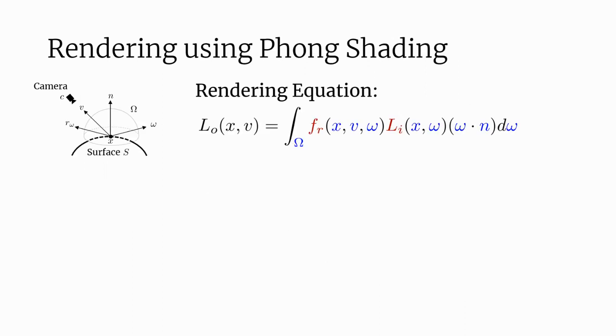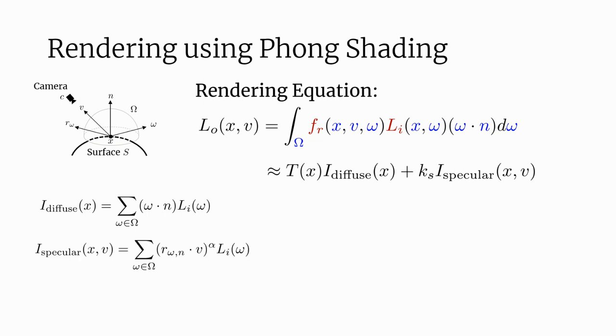More specifically, we approximate the rendering equation using Phong shading, which weights the texture prediction by the view independent diffuse lighting and the view dependent specular lighting. We model illumination using an environment map, which corresponds to the assumption that all light sources are infinitely far away and thus depends only on the direction. We train a neural environment map that predicts the grayscale of environment illumination from any direction.